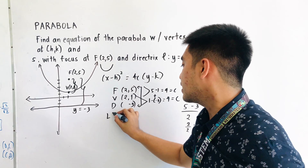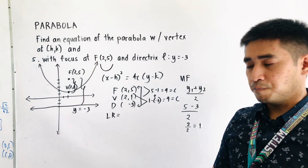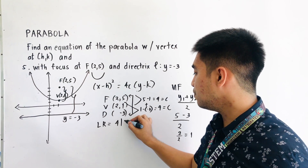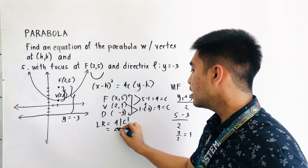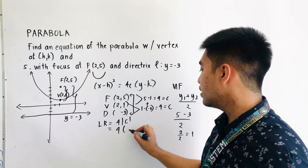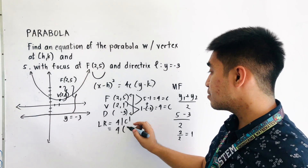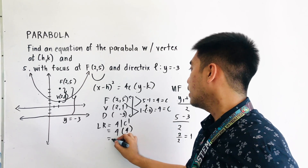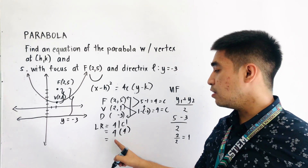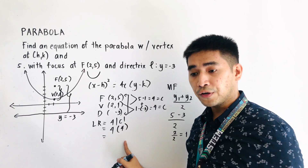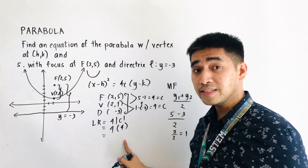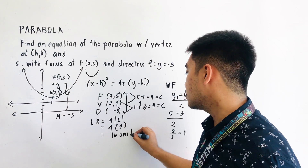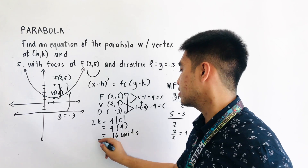Now let us get the value of the latus rectum. The latus rectum equals 4 times the absolute value of c, which is 4 times 4, equals 16. Therefore, the latus rectum is equal to 16 units.